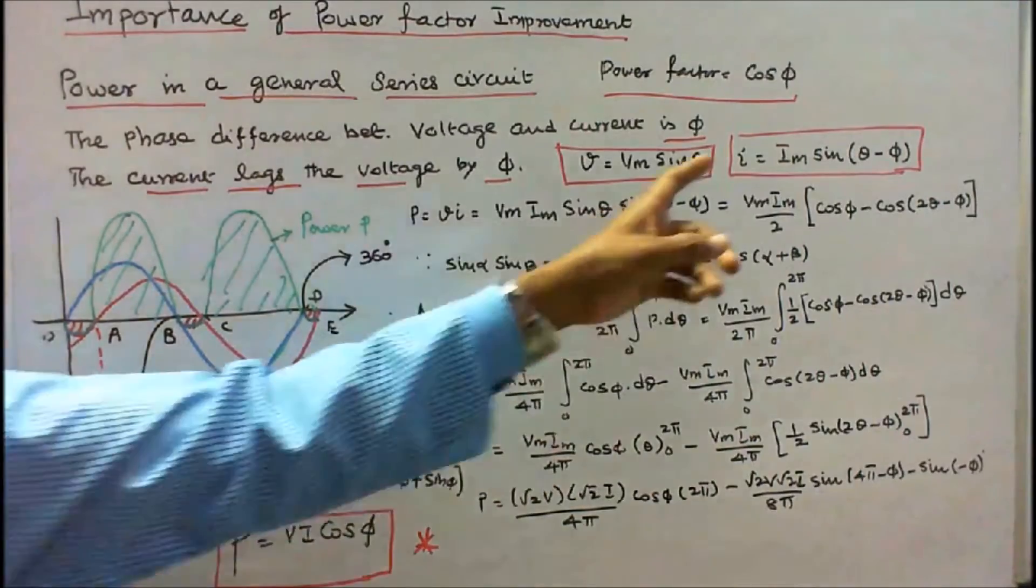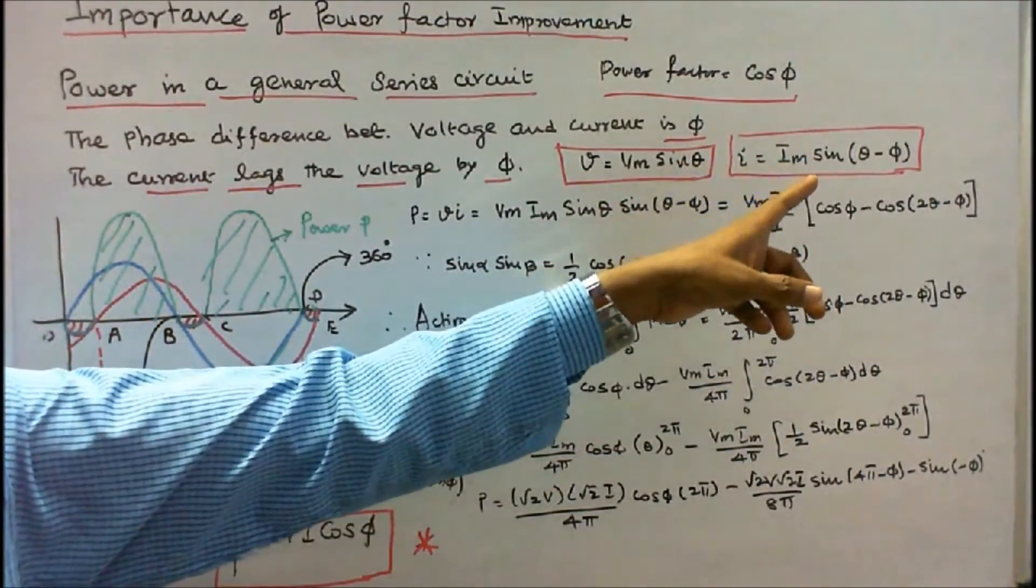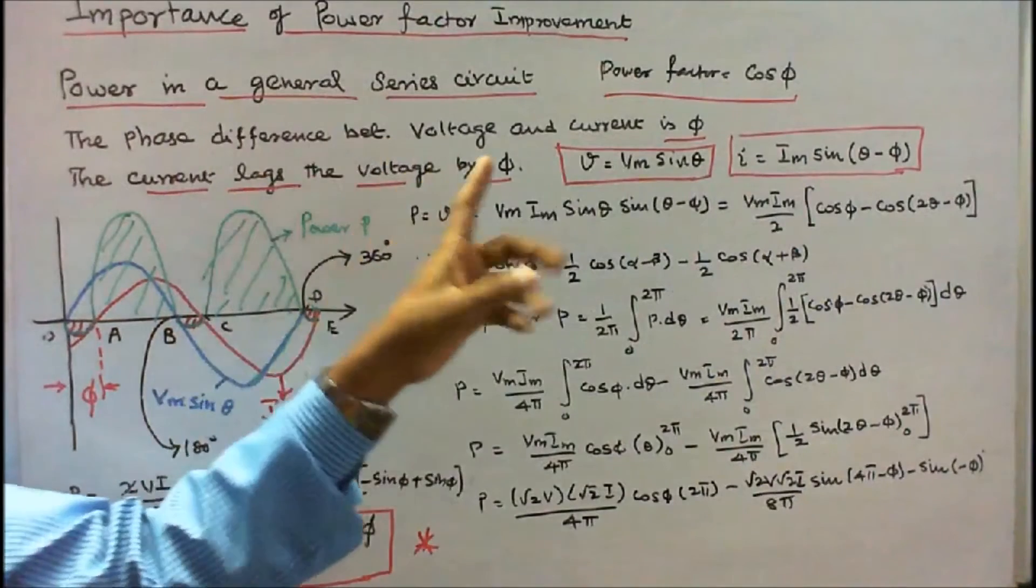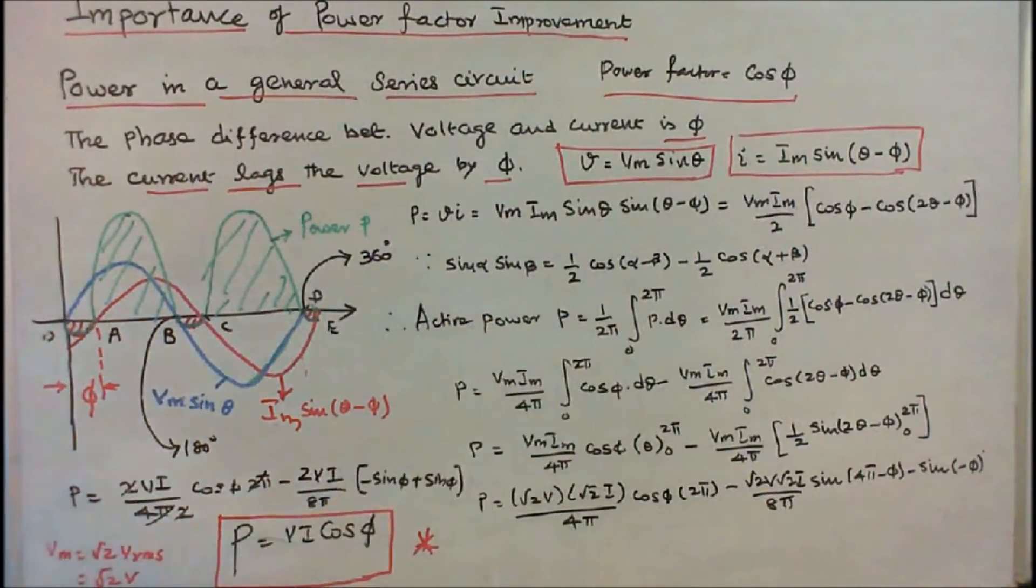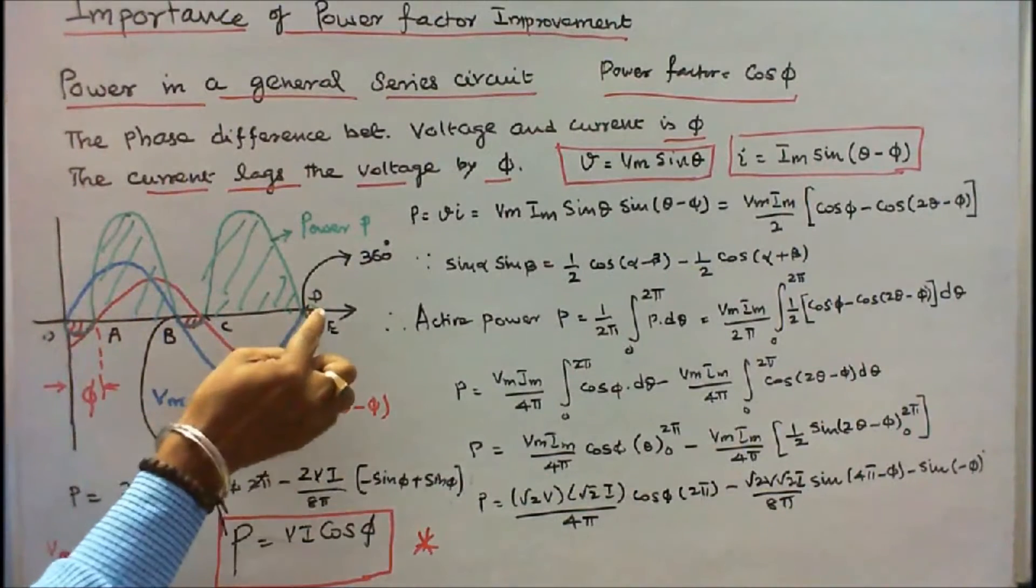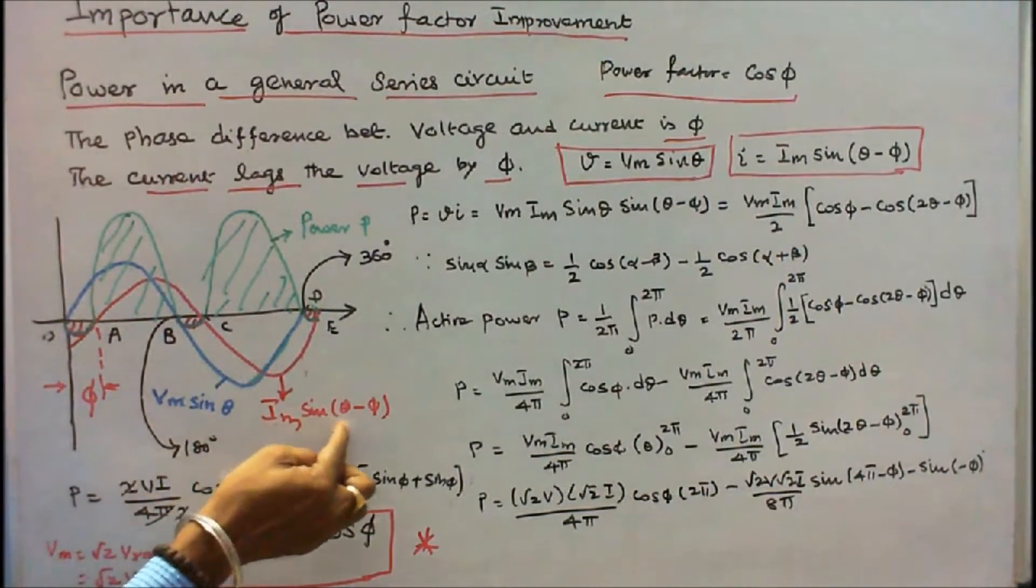I is equal to Im sin(θ - φ), where φ is the phase difference between voltage and current. The red color waveform is the current waveform Im sin(θ - φ).